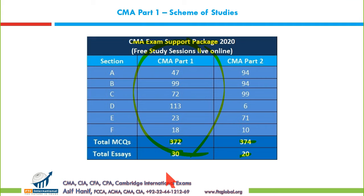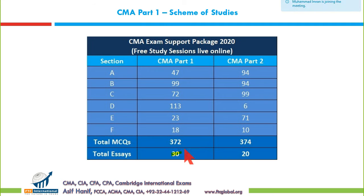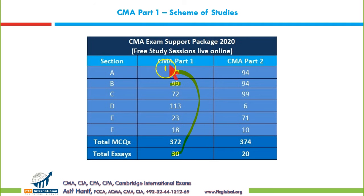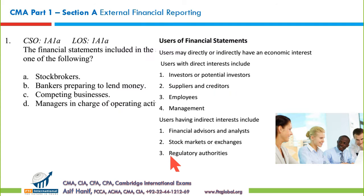Today's agenda is to start external financial reporting. There are 47 MCQs and a few essay types from section A. We will focus on MCQs and related essay types from section A, then move on to section B. The primary focus is MCQs from the CMA exam support package.